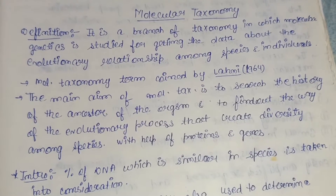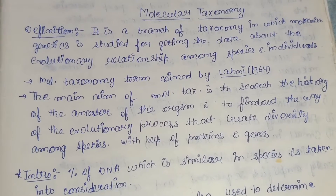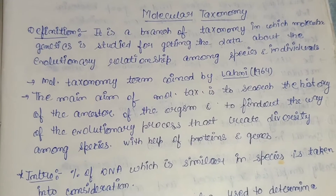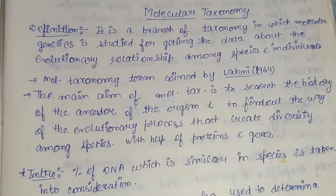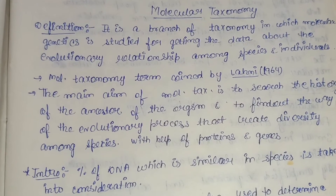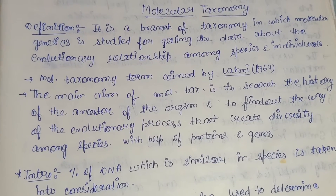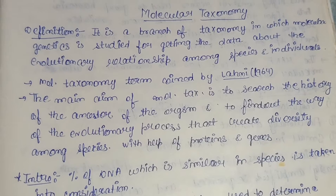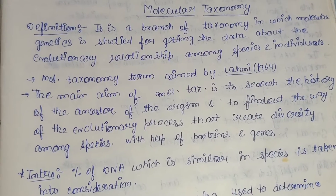Molecular taxonomy is a branch of taxonomy in which molecular genetics is studied for getting data about the evolutionary relationship among species and individuals — that is, how they are related to each other. The term molecular taxonomy was coined by Lehny in 1964. Its main aim is to search the history of the ancestor of the organism and to find out the way of the evolutionary process that creates diversity among species.